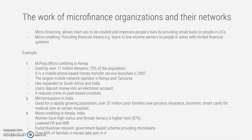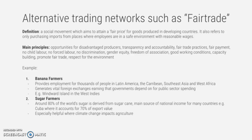There is also microcrediting in Kerala, India, where women have high status and female literacy is higher at 87 percent. There are also lower fertility rates and infant mortality rates. A government-based scheme provides micro loans, and over 50 percent of families in Kerala take part in it, boosting human development opportunities.